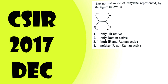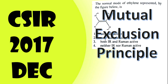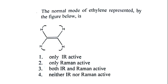This is a question from 2017 December based on the mutual exclusion principle. The normal modes of ethylene represented by the figure below are given. The options are: option one is only IR active, option two is only Raman active, option three is both IR and Raman active.